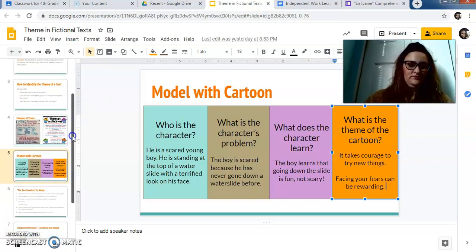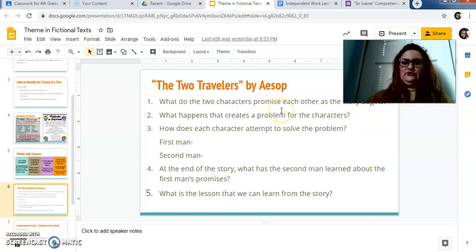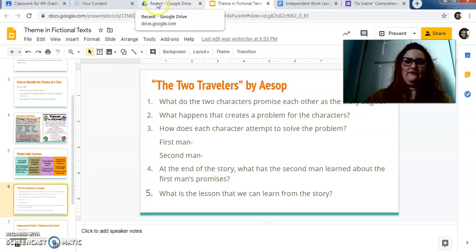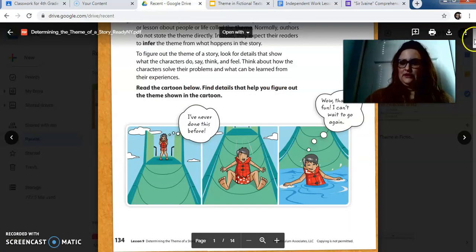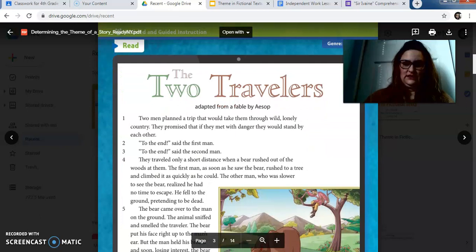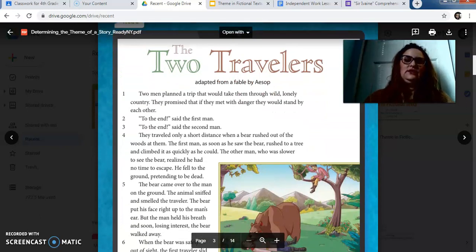So we are going to read now the two travelers by Aesop. It's an old folktale. So figure out the lesson learned slash moral after we look at it together. So follow along in your material with the two travelers. Two men planned a trip that would take them through wild, lonely country. They promised that if they met with danger, they would stand by each other. To the end, said the first man. To the end, said the second man.